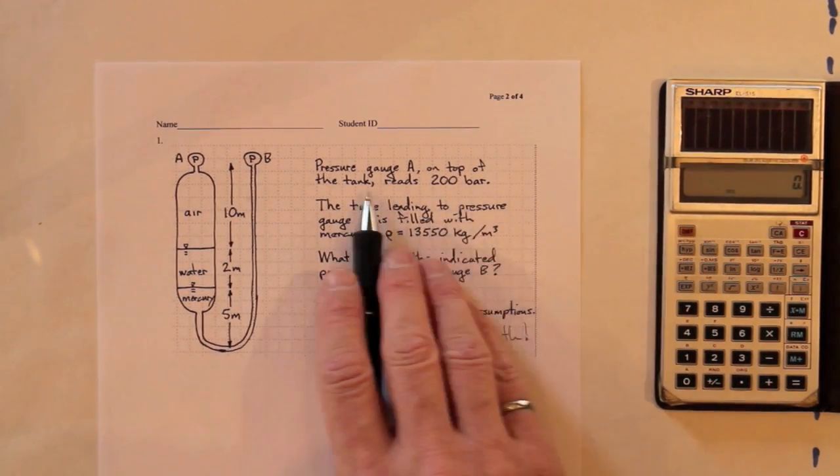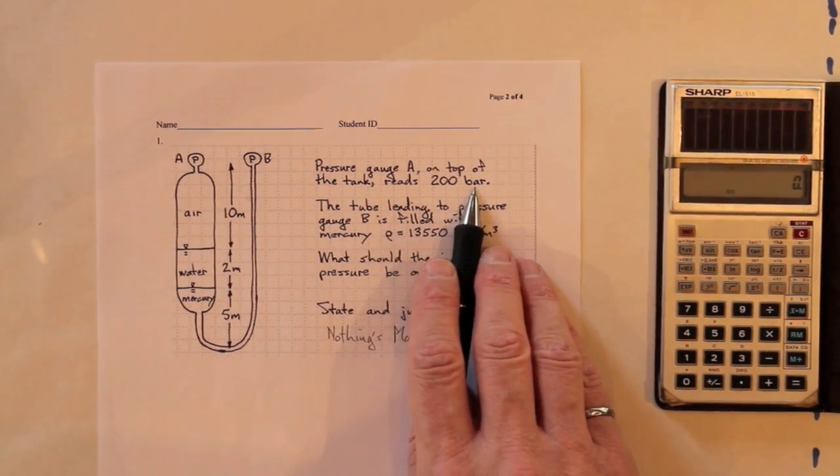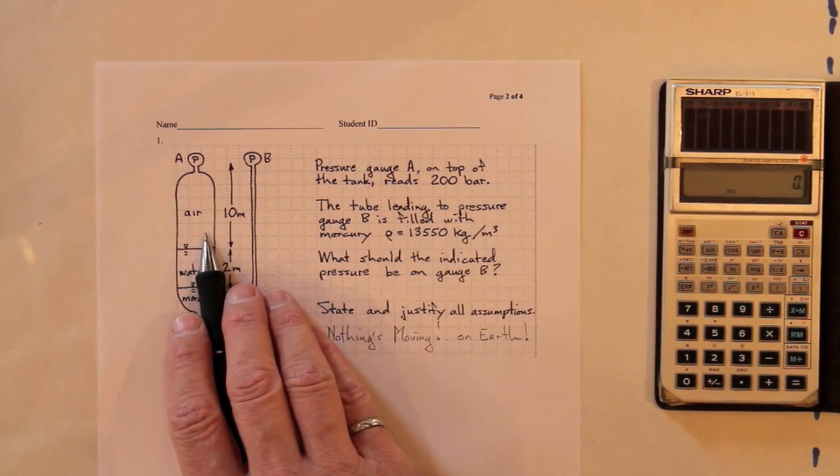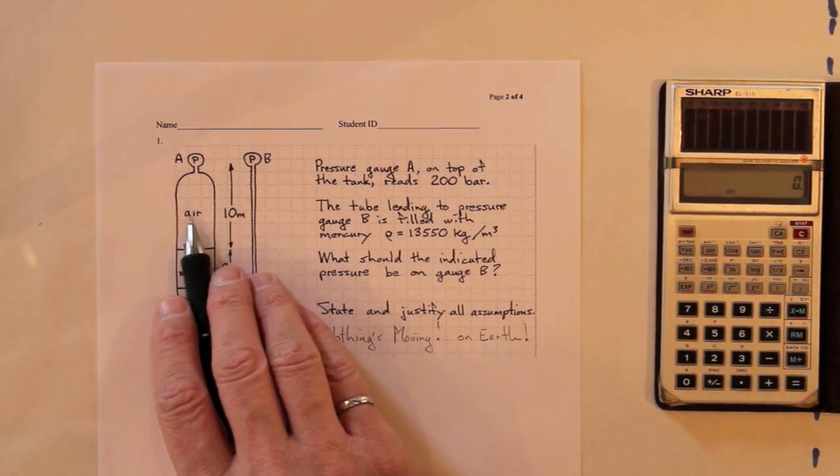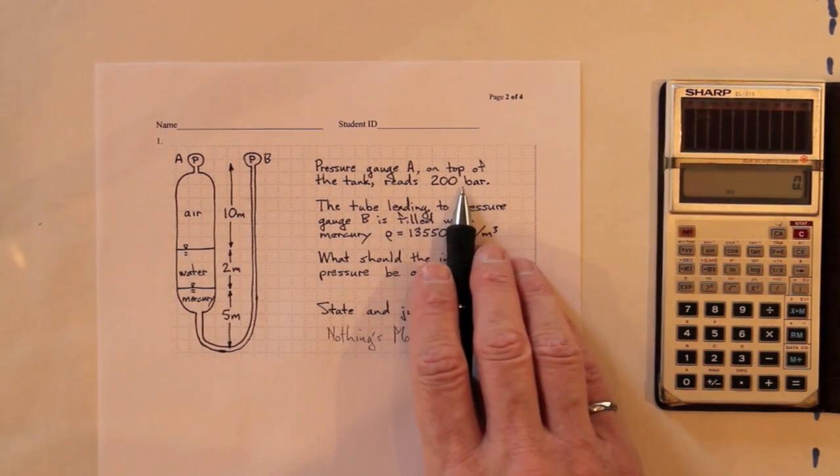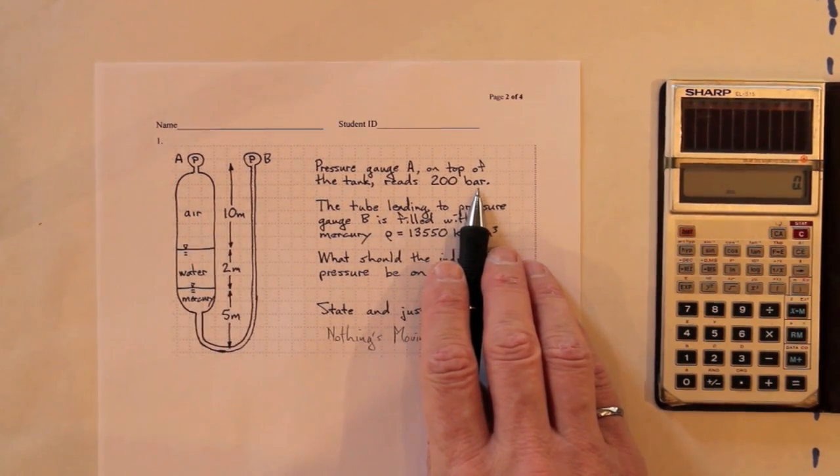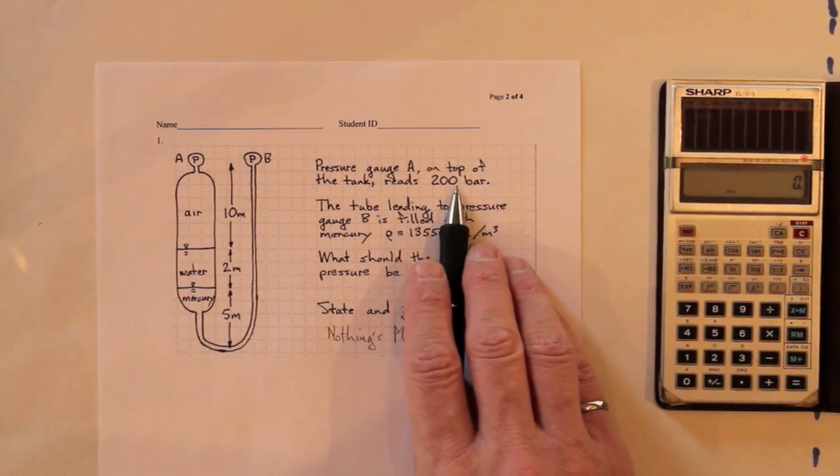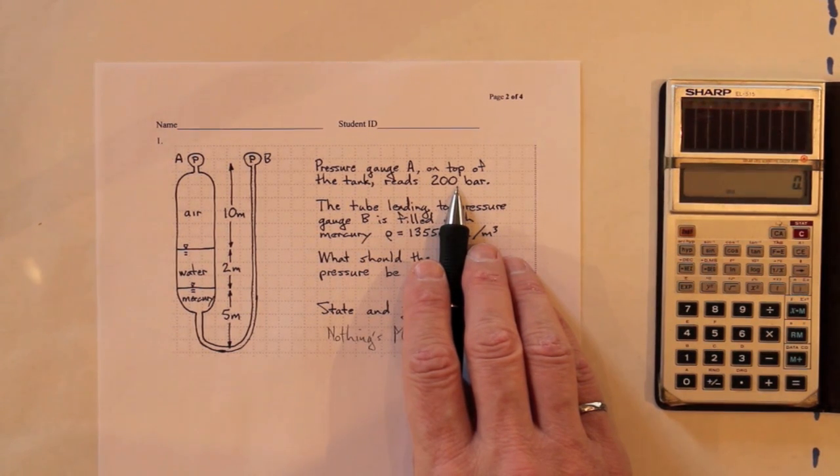Pressure gauge A on top of the tank reads 200 bar. That's a pretty high pressure. The air density won't be negligible. If air is an ideal gas, then at 200 bar, that's 200 atmospheres,